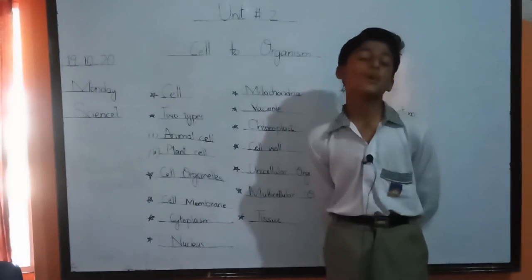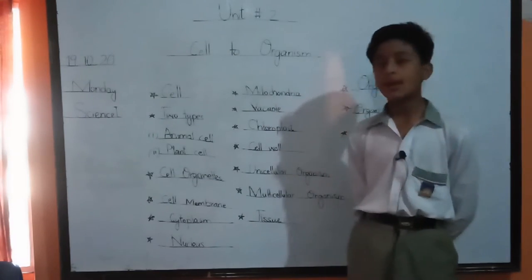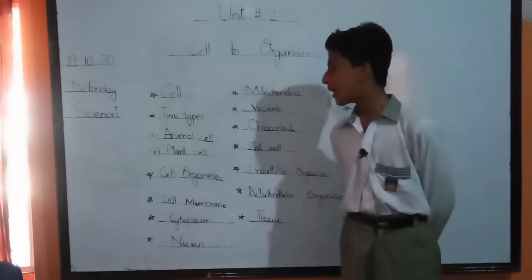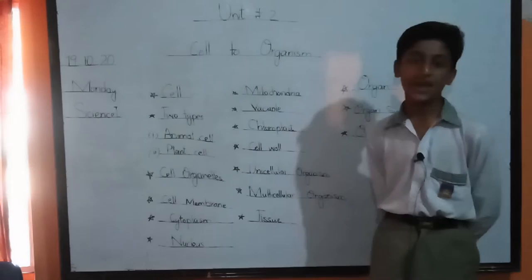Cell wall. Cell wall is present in plant cells. It is not present in animal cells. And in plant cells there are also cell membranes.